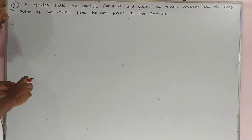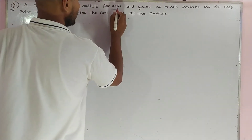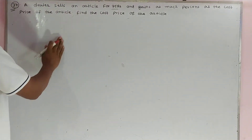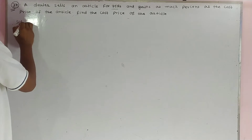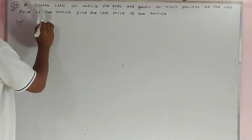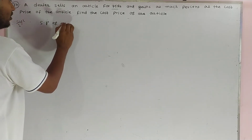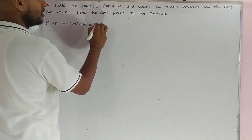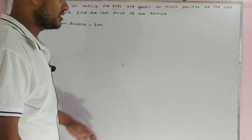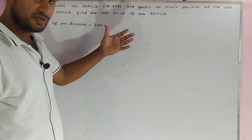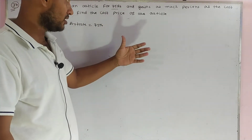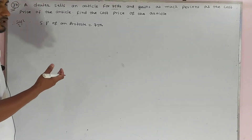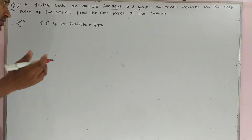A dealer sells an article for Rs.75 — that is the SP is given. The SP of an article is Rs.75. And the gain is as much percentage as the cost price, meaning gain percentage is equal to the cost price. We need to find the cost price, the CP of the article.